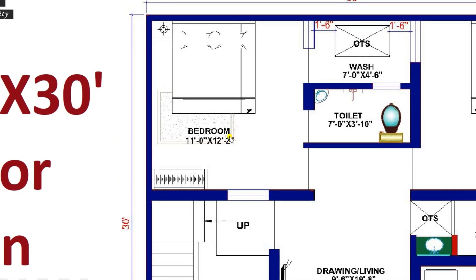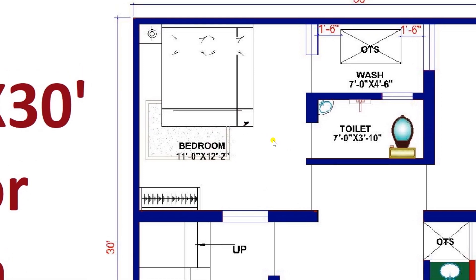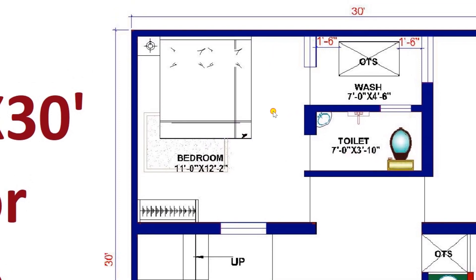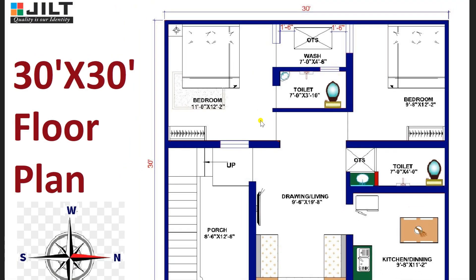Now I am entering the master bedroom of our plan, which has a dimension of 11 feet by 12 feet 2 inches. This master bedroom is attached with a toilet of dimension 7 feet by 3 feet 10 inches, and also attached with a wash area of 7 feet by 4 feet 6 inches. We have provided one duct for the purpose of ventilation.